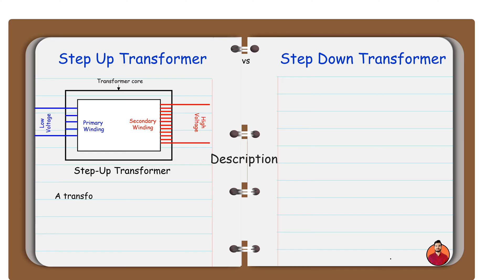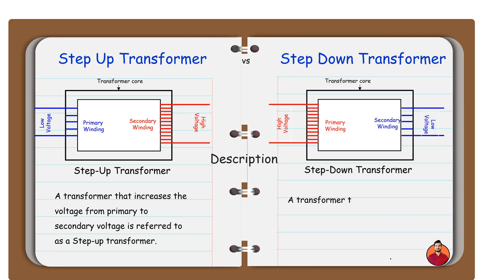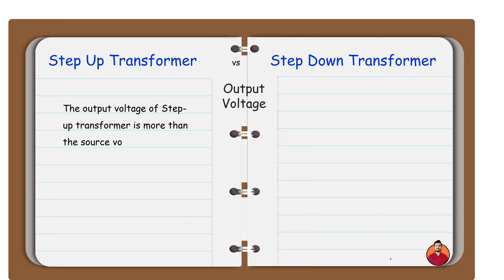A transformer that increases the voltage from primary to secondary voltage is referred as a step up transformer. A transformer that reduces the voltage from secondary to primary voltage is referred as step down transformer. The output voltage of step up transformer is more than the source voltage, while the output voltage of step down transformer is less than the source voltage.